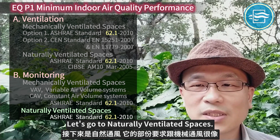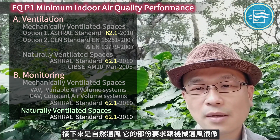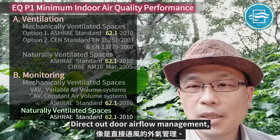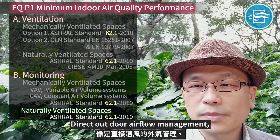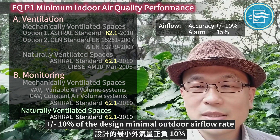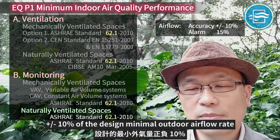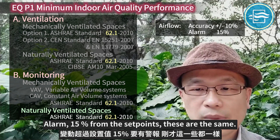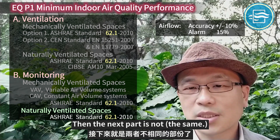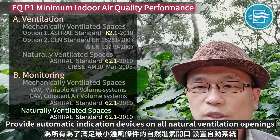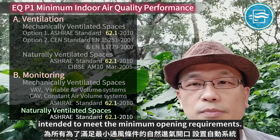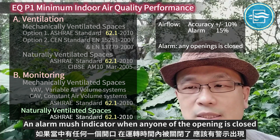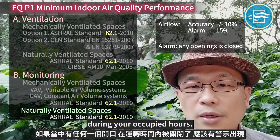For naturally ventilated spaces, some requirements are the same as for mechanical systems, such as direct outdoor air flow measurement at plus or minus 10% of the design minimum outdoor air flow rate, with an alarm at 50% from the set point. Additionally, provide automatic indication devices on all natural ventilation openings intended to meet the minimum opening requirements. An alarm must indicate when any one of the openings is closed during occupied hours.